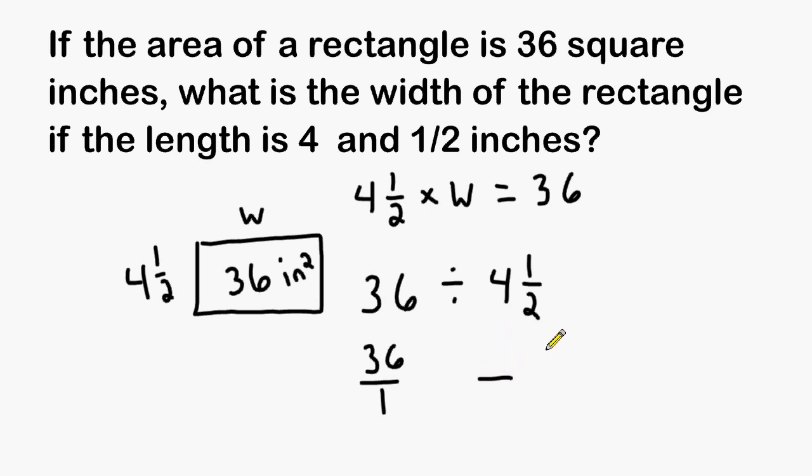To do this, the denominator is going to remain the same, but to get our numerator, we multiply our denominator by our whole number, and 2 times 4 is equal to 8, and then you add the numerator to that product, and 8 plus 1 is 9.